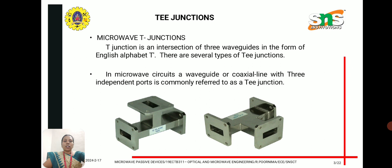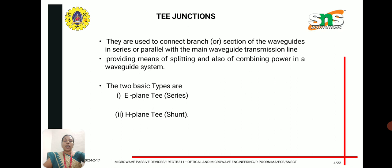Here we have three waveguides at an intersection, as seen in this diagram. In microwave circuits, a waveguide or coaxial line with three independent ports is commonly referred to as a T-junction. They are used to connect a branch or section of the waveguide in series or parallel with the main waveguide.